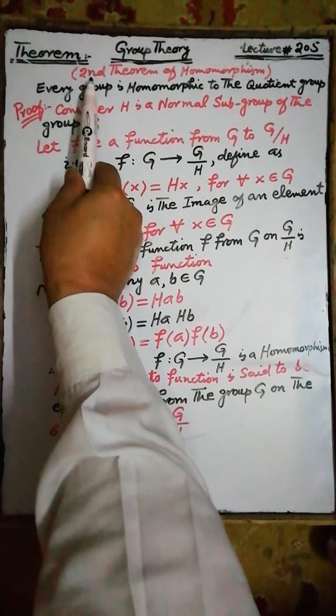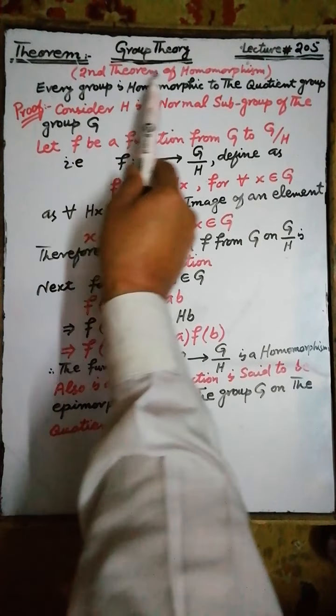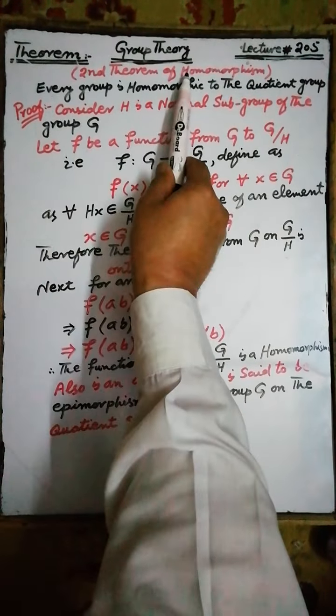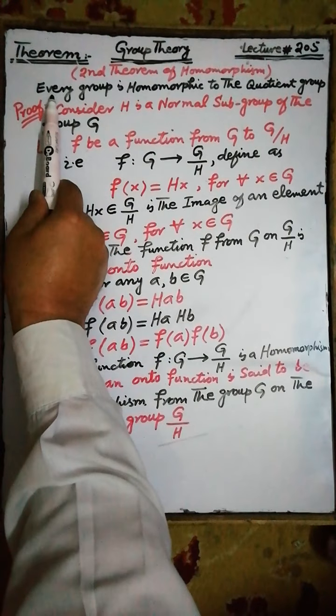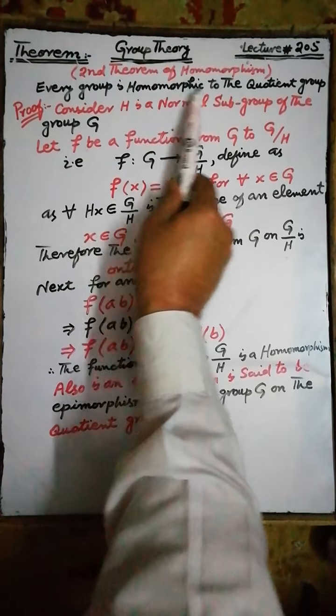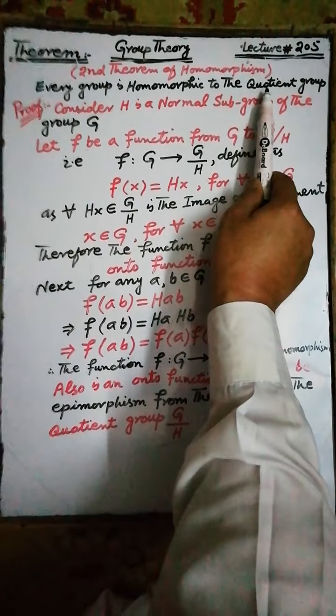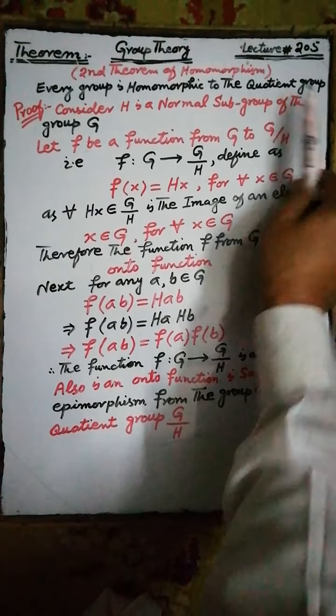Next theorem. This is the second theorem of homomorphism. The statement of this theorem is: every group is homomorphic to its quotient group.